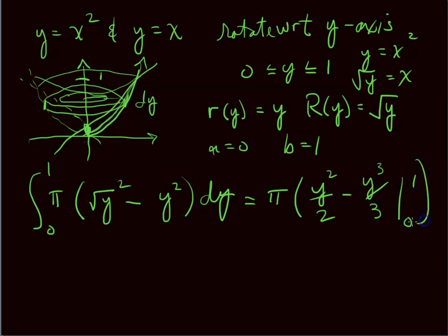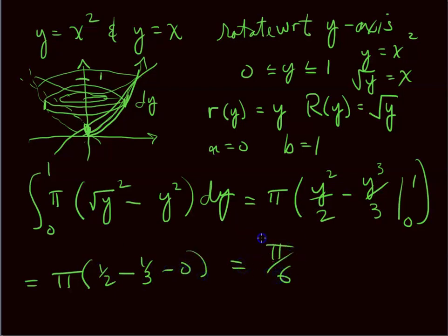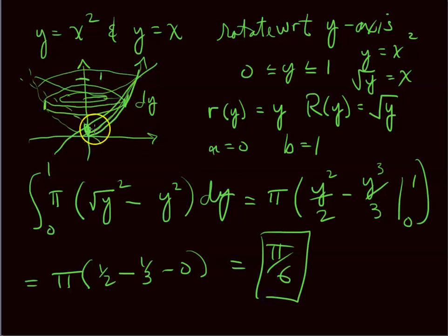With a = 0, b = 1, the integral is π ∫ from 0 to 1 of ((√y)² − y²) dy = π ∫ from 0 to 1 of (y − y²) dy = π[y²/2 − y³/3] from 0 to 1 = π(1/2 − 1/3) = π/6. Same volume as before, as expected — it's the same funnel-shaped solid.